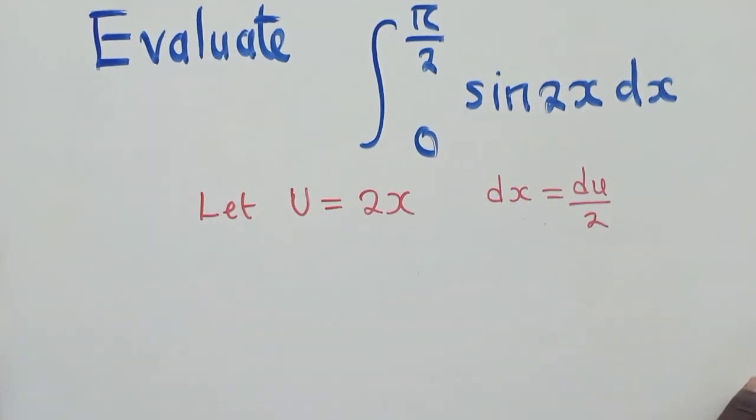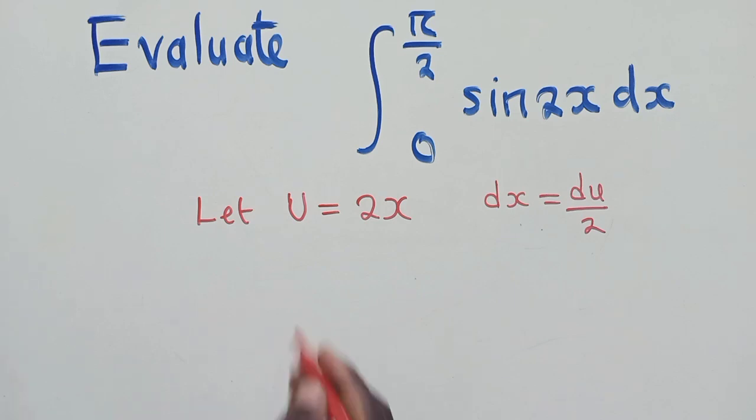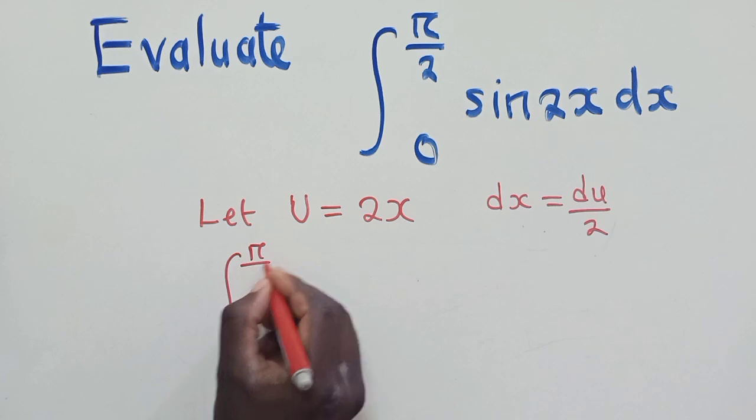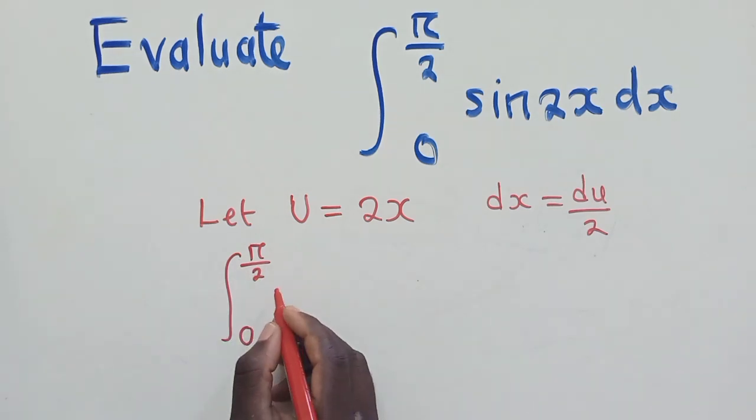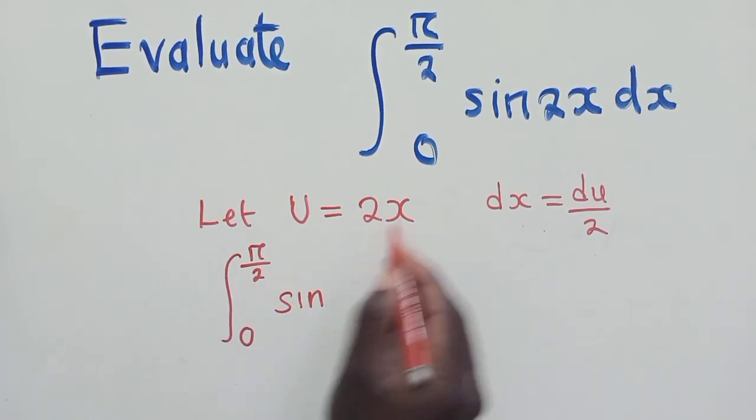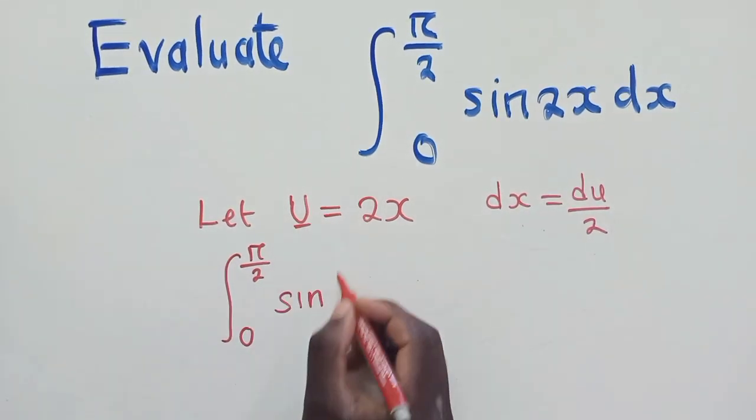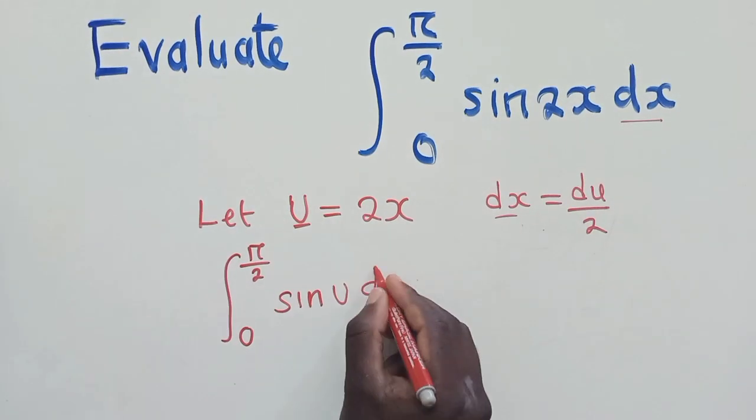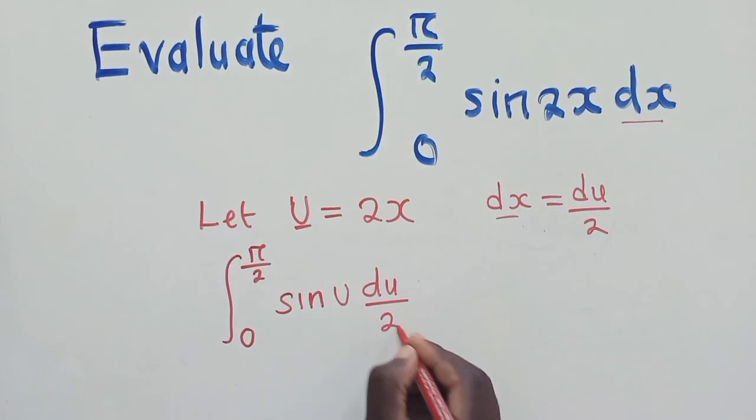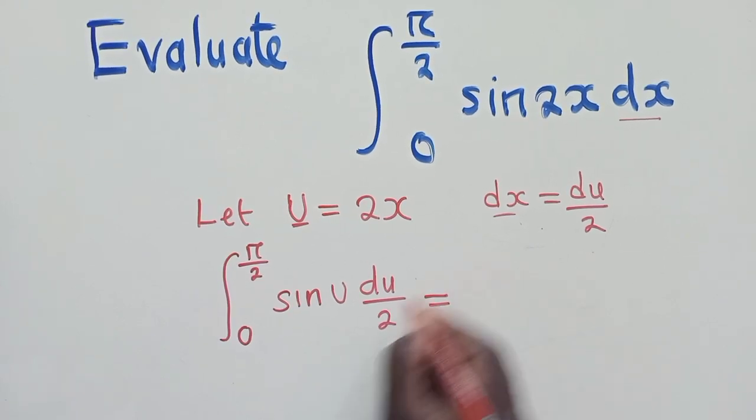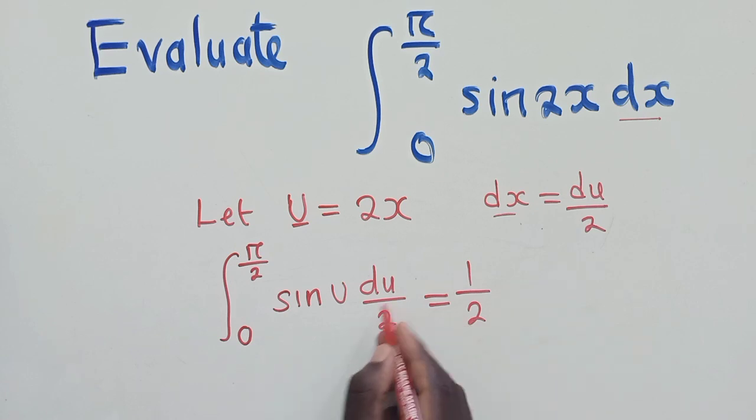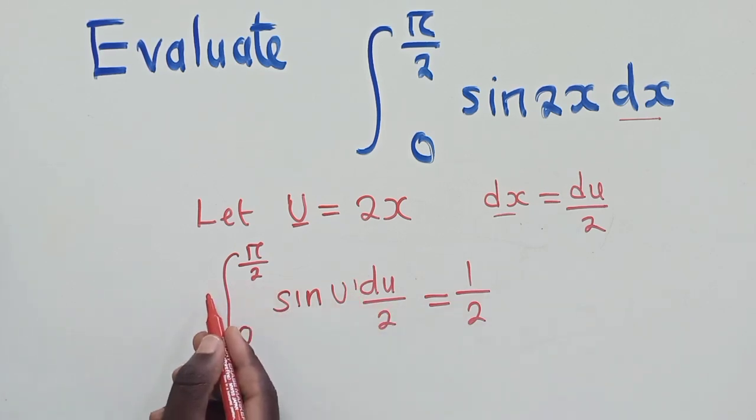We can now do the substitution. So to substitute, we shall have the integral from 0 to π/2 of sine. Here we substitute the u. And here, where dx is, we substitute it du over 2. So now we can work out things. This one will come in front. It will be 1 over 2. Since it's a fraction, it can come in front of the integral.